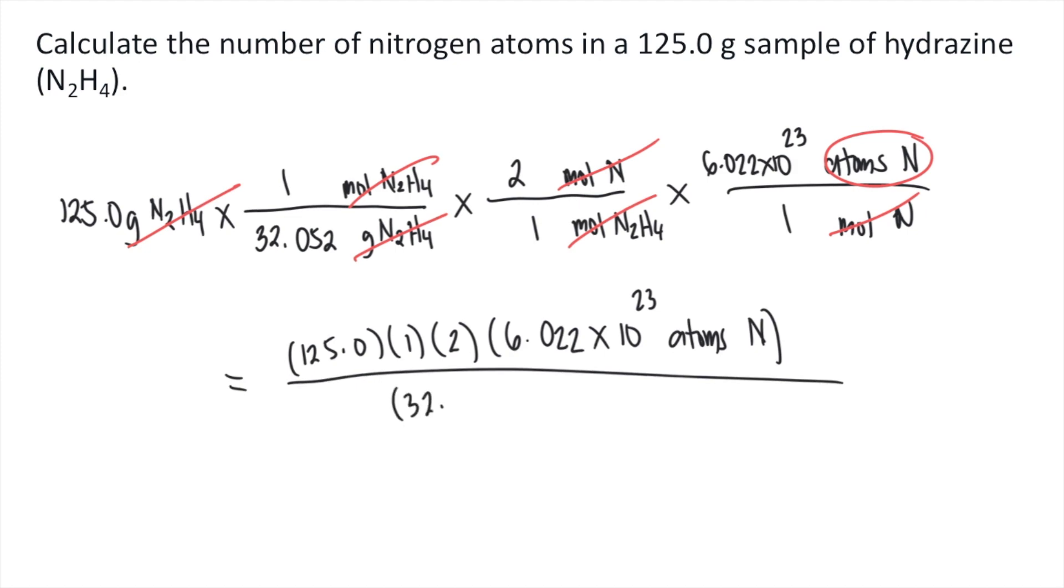we have 32.052 times 1 times 1. So if you solve this in your calculator,